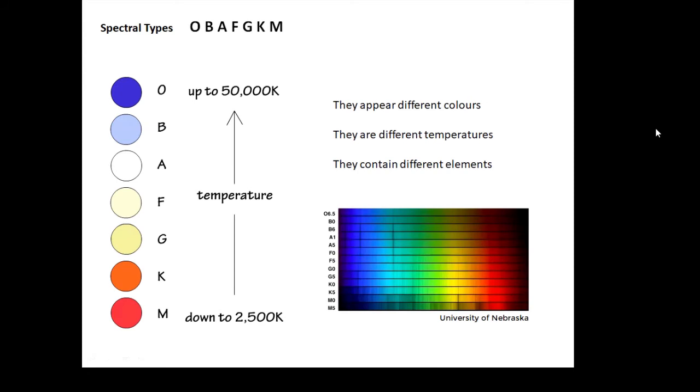You should learn the colors. The very hot ones, up to 50,000 Kelvin, are blue. The much cooler ones, down to 2,500K, are red. The ones in the middle are kind of white and yellow. I think you should learn the temperatures here and you should learn the colors. Oh Be A Fine Girl Kiss Me - they are basically the seven different types of star.